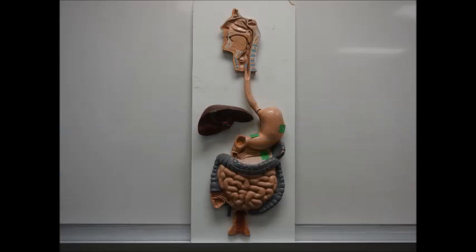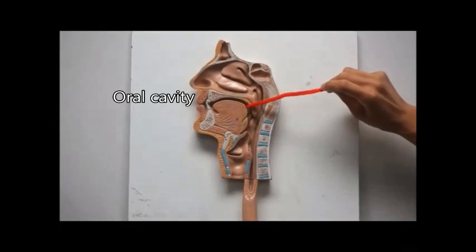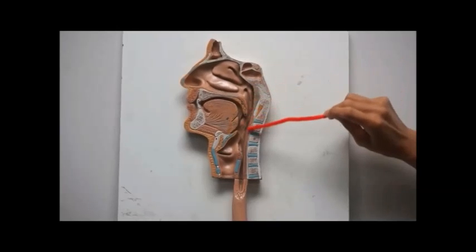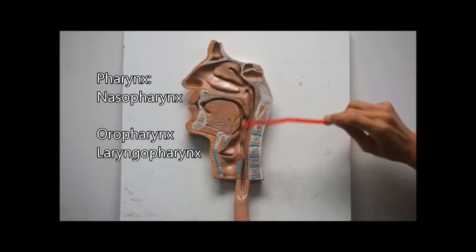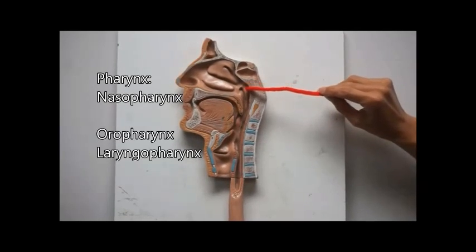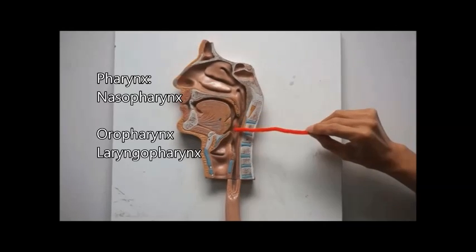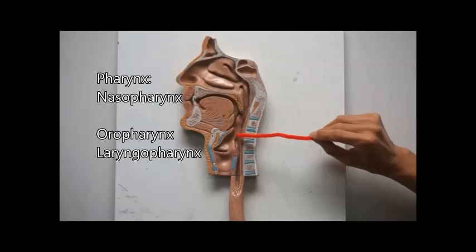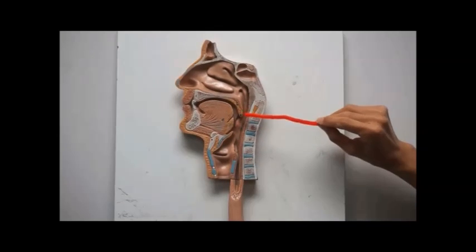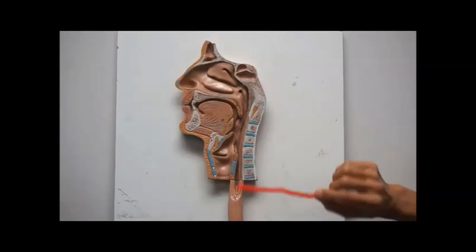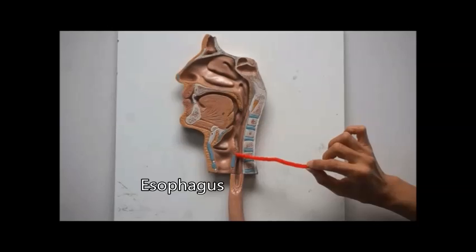This is the digestive system model — the older model, but you're responsible for knowing the information on it. This is the oral cavity. This whole tube right here is the pharynx, divided into three sections: the nasopharynx, the oropharynx, and the laryngopharynx. The pharynx is then connected to the esophagus.